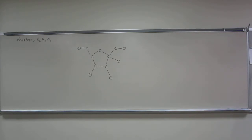Each carbon has four covalent bonds. Each oxygen has two covalent bonds. Each hydrogen has one covalent bond. The atoms are connected in the sequence shown on the board. Draw the complete structural formula of fructose.